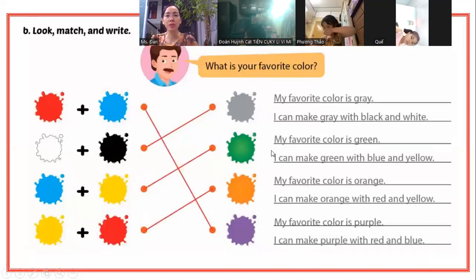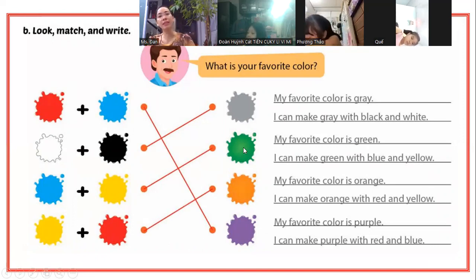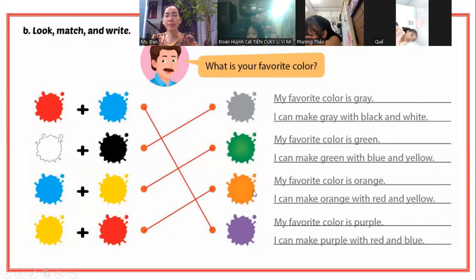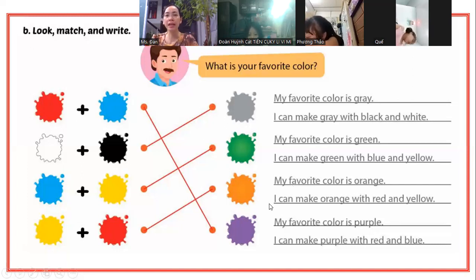Vậy bây giờ câu tiếp theo: My favorite color is green. Màu yêu thích nhất của tôi là màu xanh lá. Vậy mình sẽ tạo màu xanh lá bằng màu gì? I can make green with blue and yellow - với màu xanh dương và màu vàng. Tiếp theo, chúng ta tạo ra màu cam: My favorite color is orange. I can make orange with red and yellow - màu vàng và đỏ.